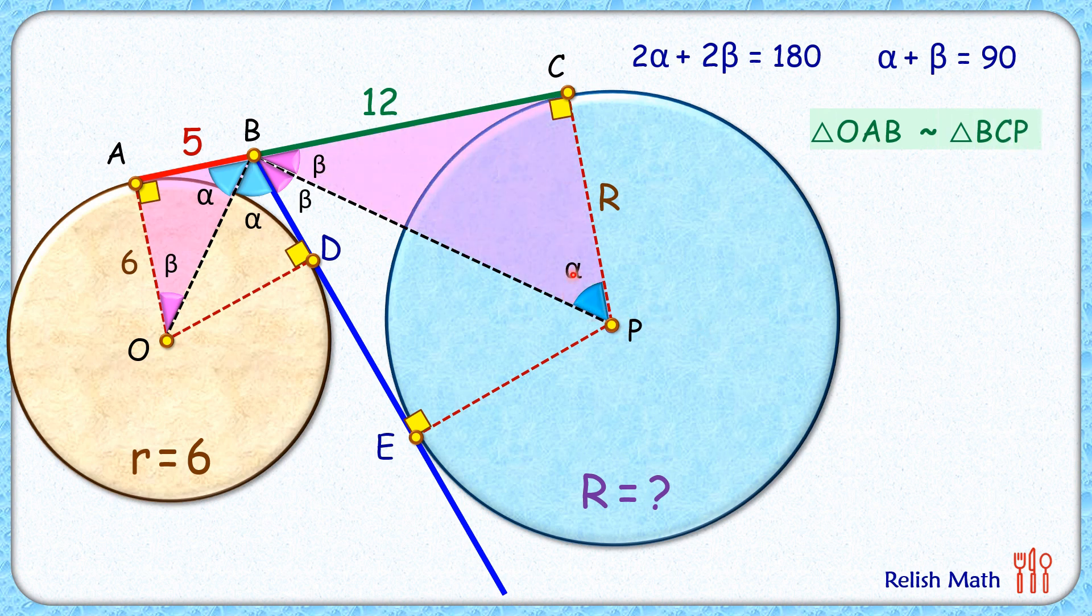If triangles are similar, then the ratio of corresponding sides will be equal. So we can say AB upon OA will be equal to CP upon BC. Now putting the values: AB is 5 centimeter, OA is 6 centimeter, CP is R centimeter, and BC is 12 centimeter. Solving it, we get the value of R as 10 centimeter.